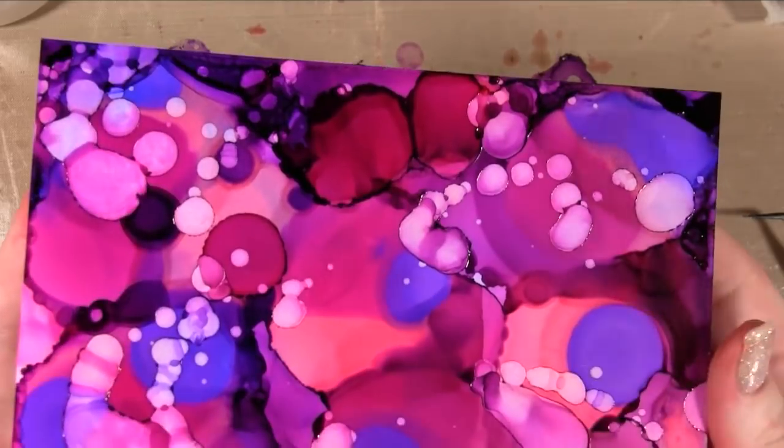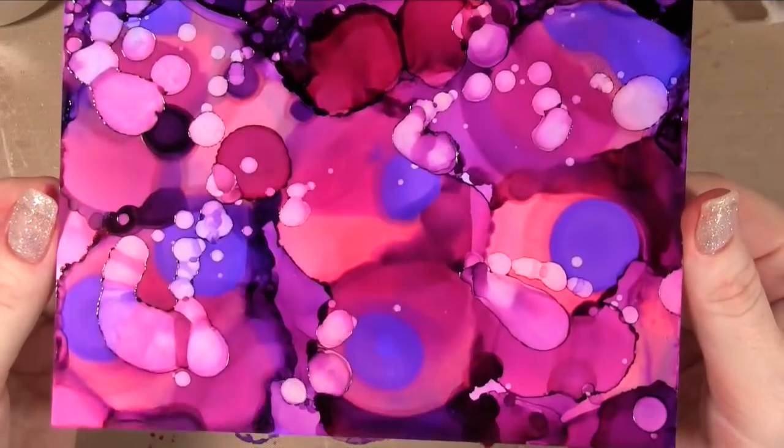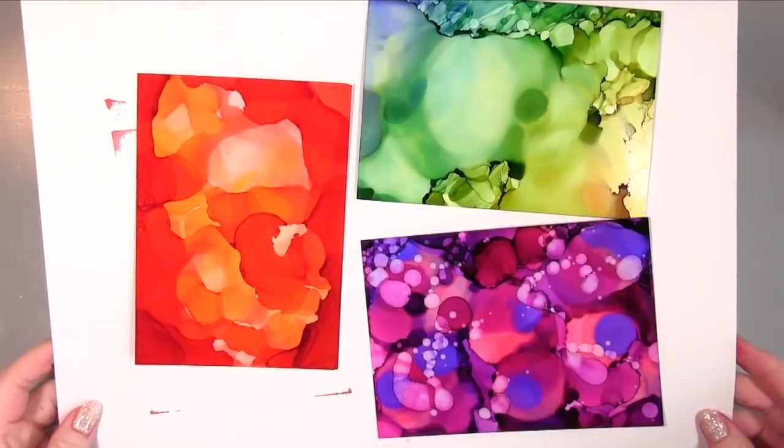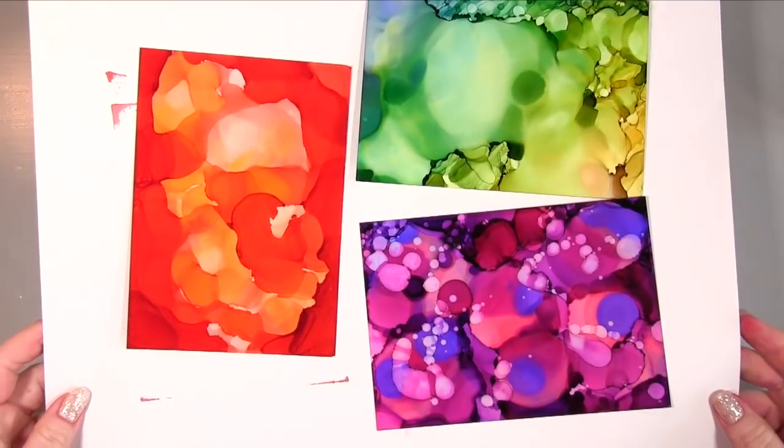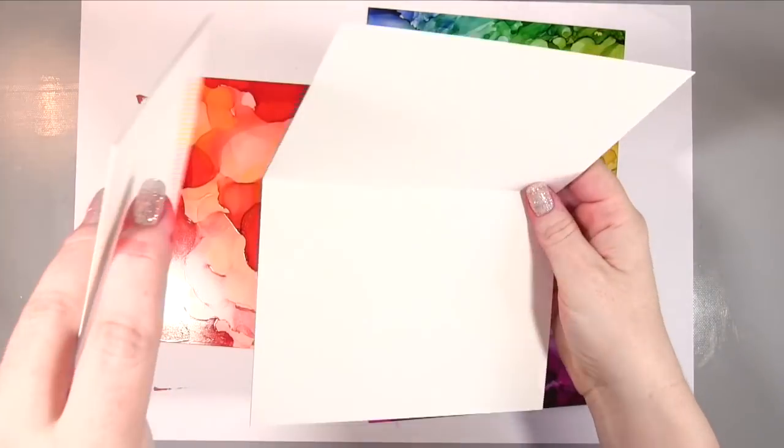So then I did a third background, very similar idea to the one we've just done except I didn't use the heat gun. You can see there with the red the difference - how the inks have clearly continued to move and they've dried naturally, so you get a very different look from that.